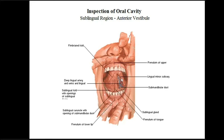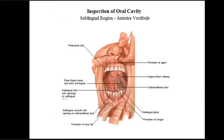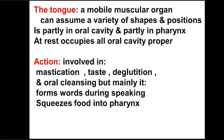Looking at the inferior surface of the tongue, you see the mucous membrane with the frenulum. In the area where we have removed a portion of the mucous membrane, you can see the vessels and nerve on the inferior surface. This is the sublingual salivary gland in the floor of the oral cavity. So: the sublingual fold with the openings of the sublingual ducts on it, the sublingual papilla with the opening of the submandibular duct at the end of the fold, and the frenulum of the tongue. The mucosa covering the oral cavity is non-keratinized stratified epithelium, continuous with the lingual gingiva and mucosa of the tongue.